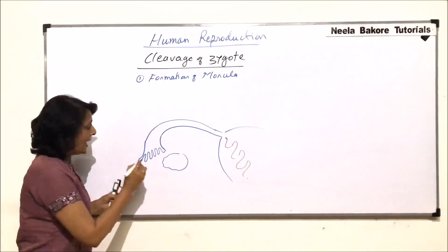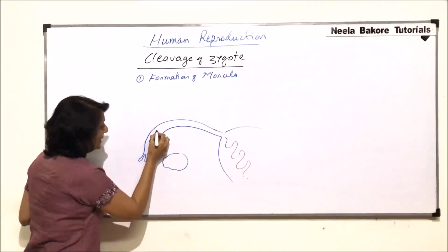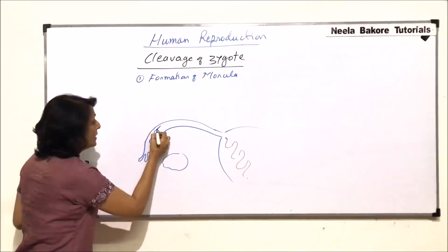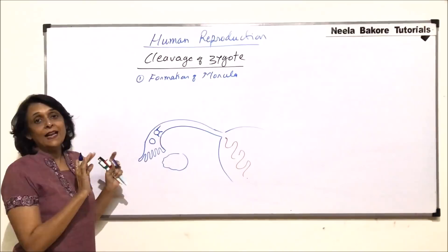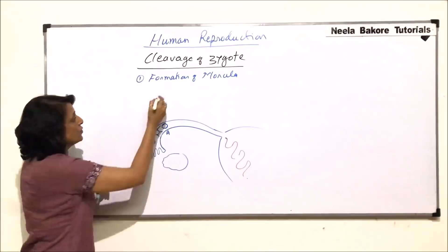Here is the ovary. From the ovary, the egg was released. The egg was received by these fimbriae. The egg came into this structure, into that opening. And in this ampulla region, the sperm reached up to the egg, surrounded the egg, and fertilization has taken place. This stage which we are drawing, we will write it as A — this is the zygote.